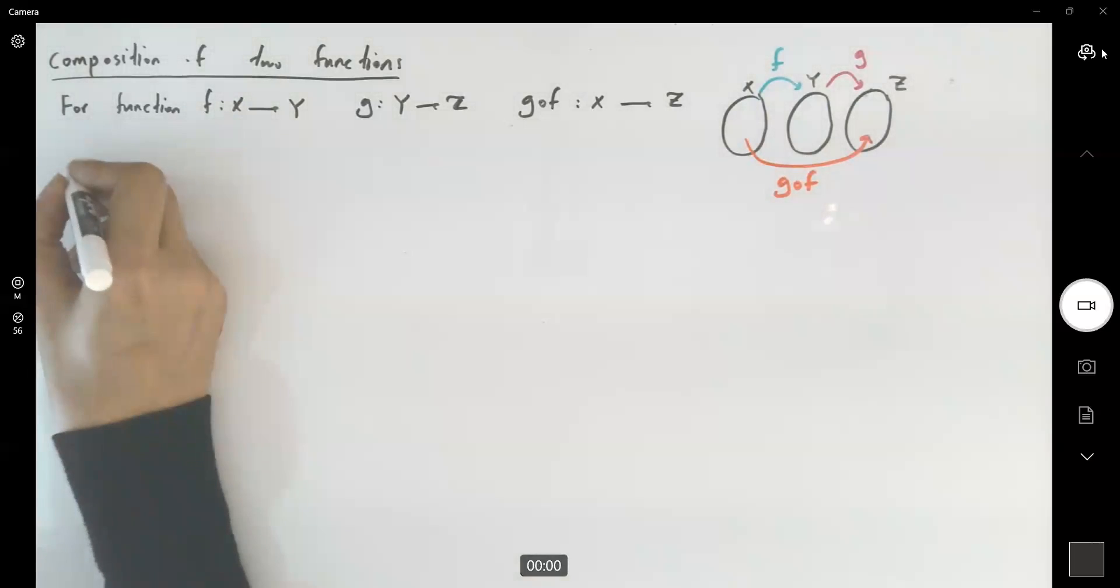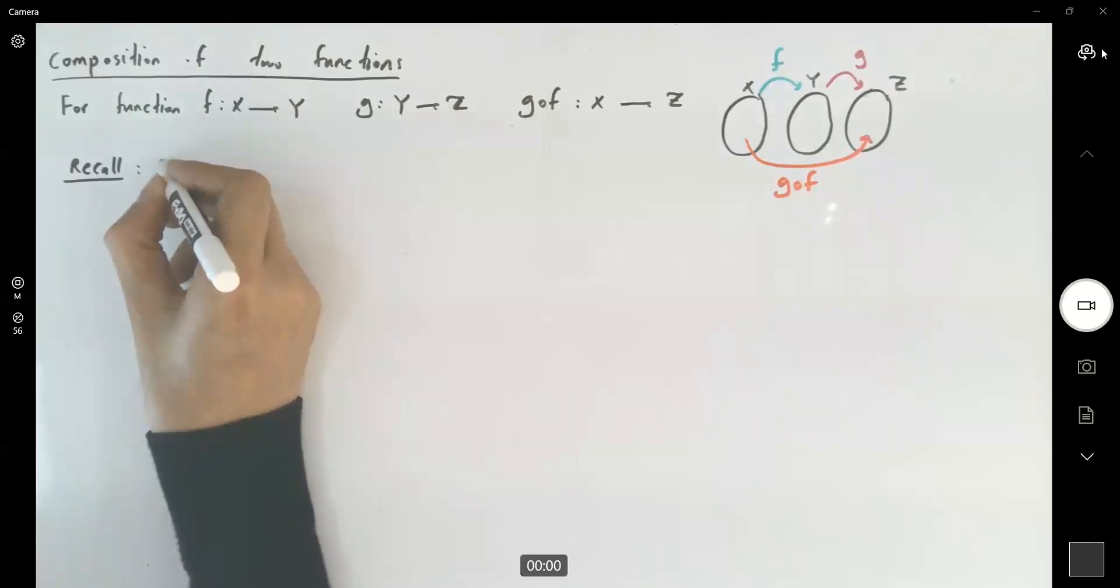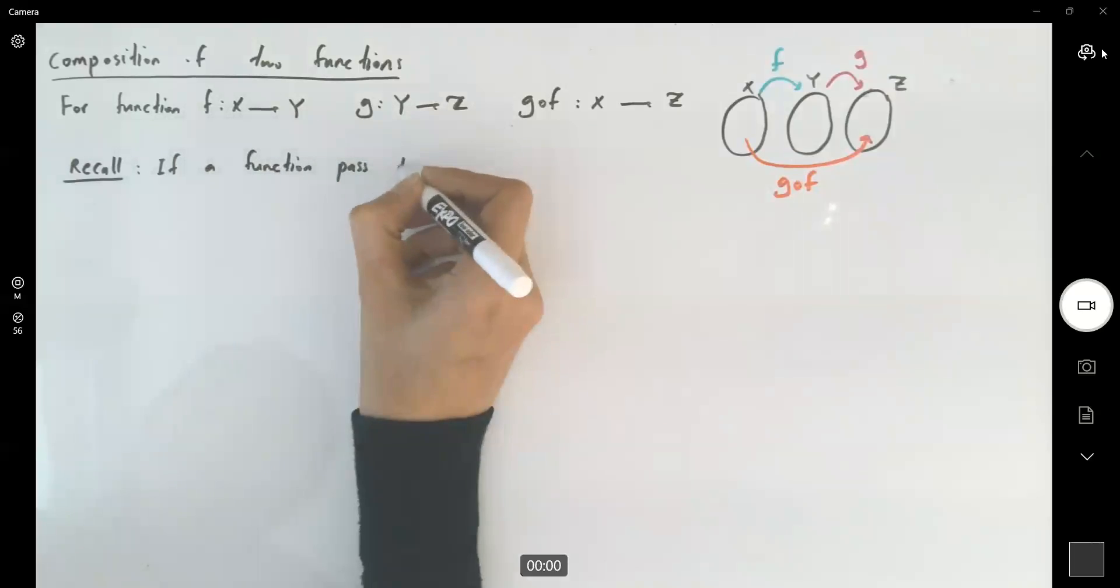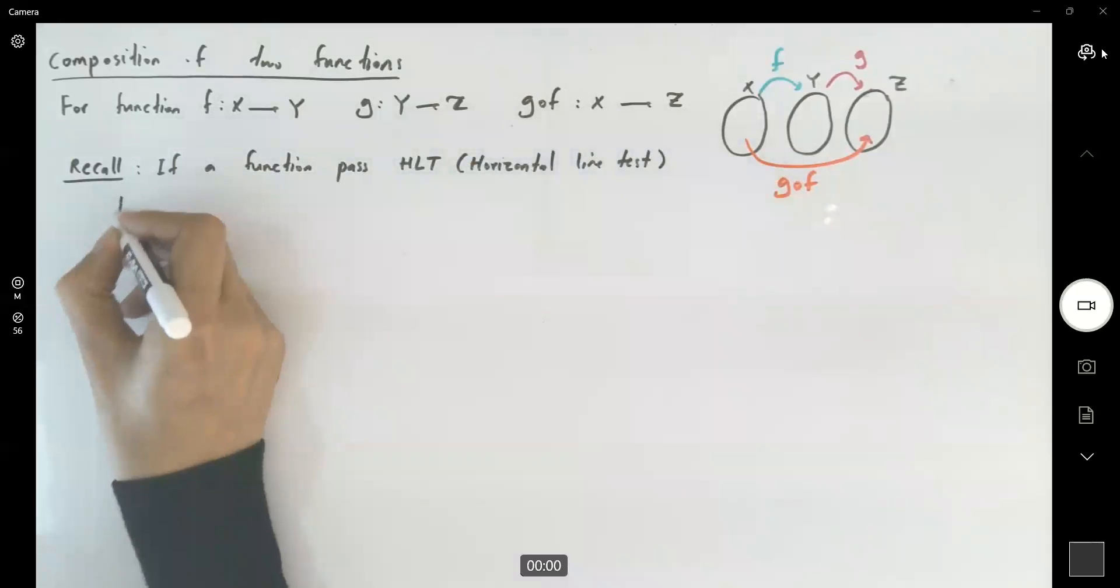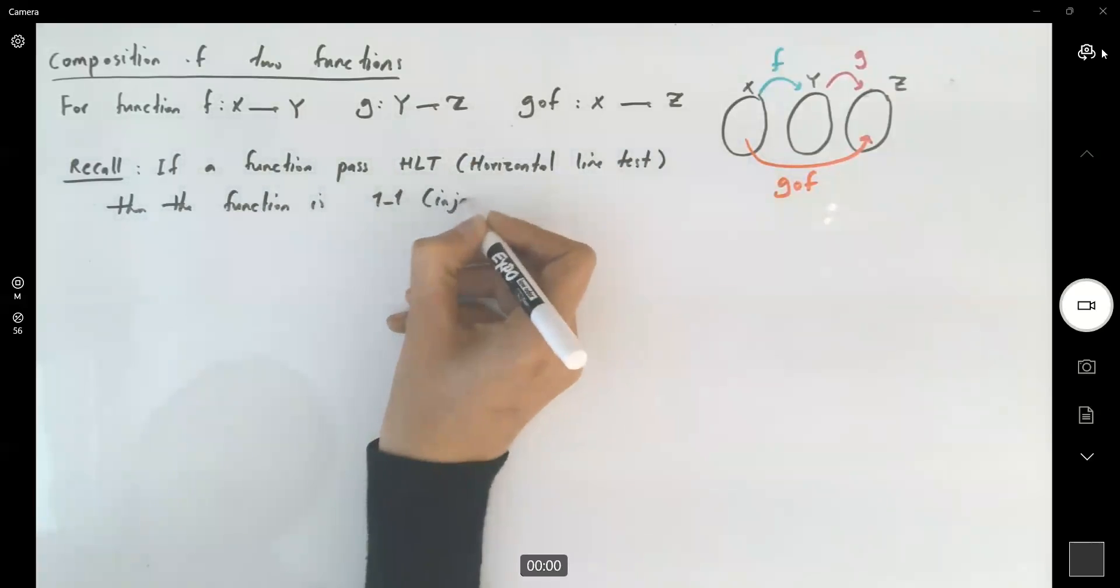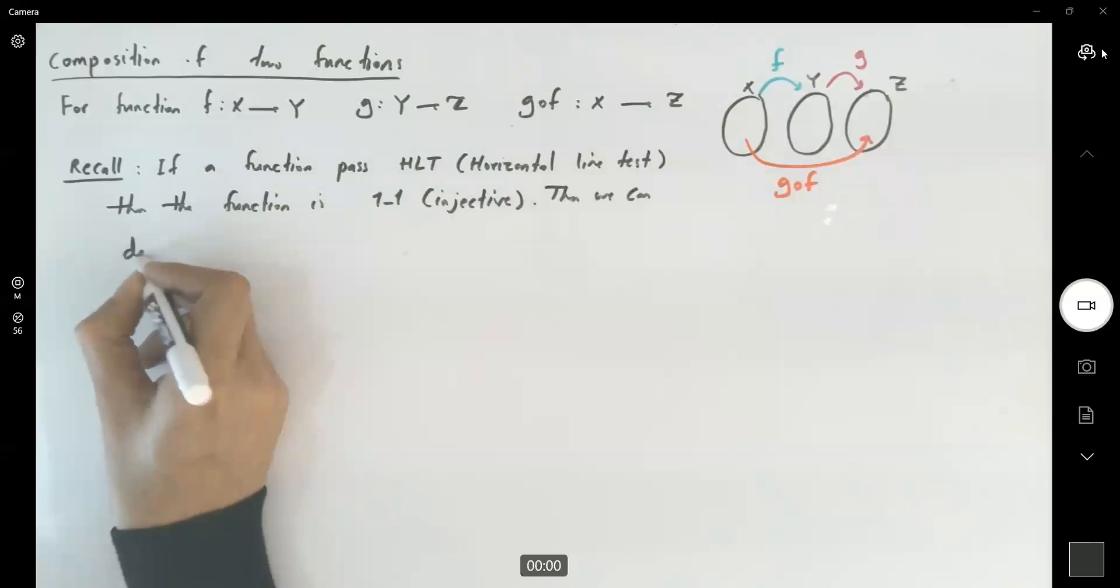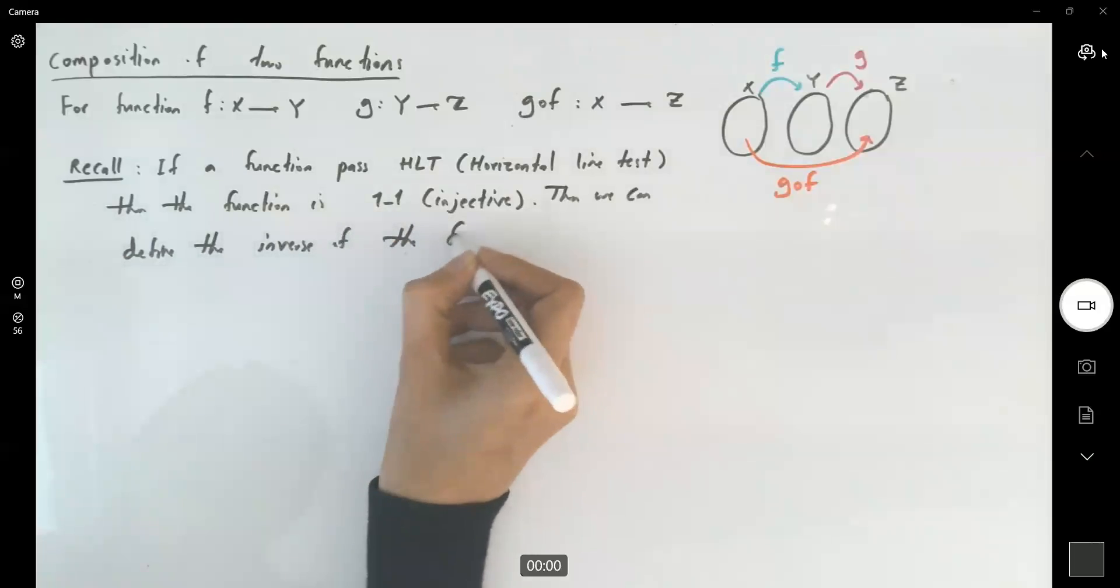We call a function one-to-one or injective if the function passes the horizontal line test. Then we can define the inverse of the function.